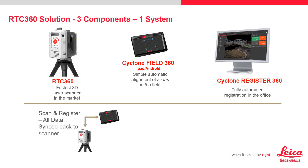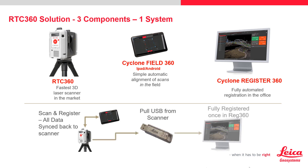A user would collect the scans and images with the RTC360, add any tags or measurements with the tablet, which is then synced back to the RTC360, then remove the USB storage and import the data into Register 360. If Viz has been utilized, the user can inspect the data as needed, then advance directly to publishing the data, skipping the registration portion altogether.